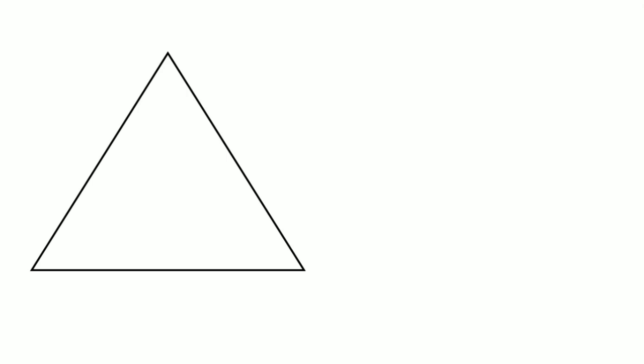Hi everybody! Suppose that we have our equilateral triangle ABC. Now in this equilateral triangle, consider a point O inside of that triangle. Now join each and every vertex to this point O.